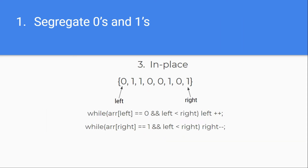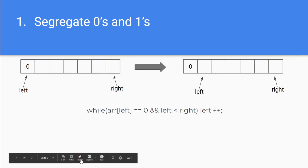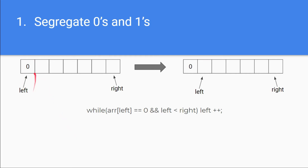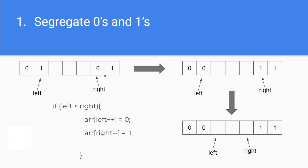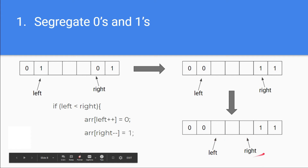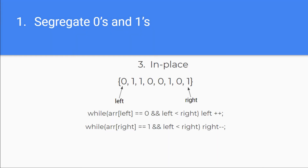There are three possibilities: one — when the value at the left index is zero, simply increment the left pointer; two — when the value at the right index is one, decrement the right pointer; three — when neither value is in the correct place and left is less than right, replace the left value with zero and the right value with one, then increment left and decrement right.